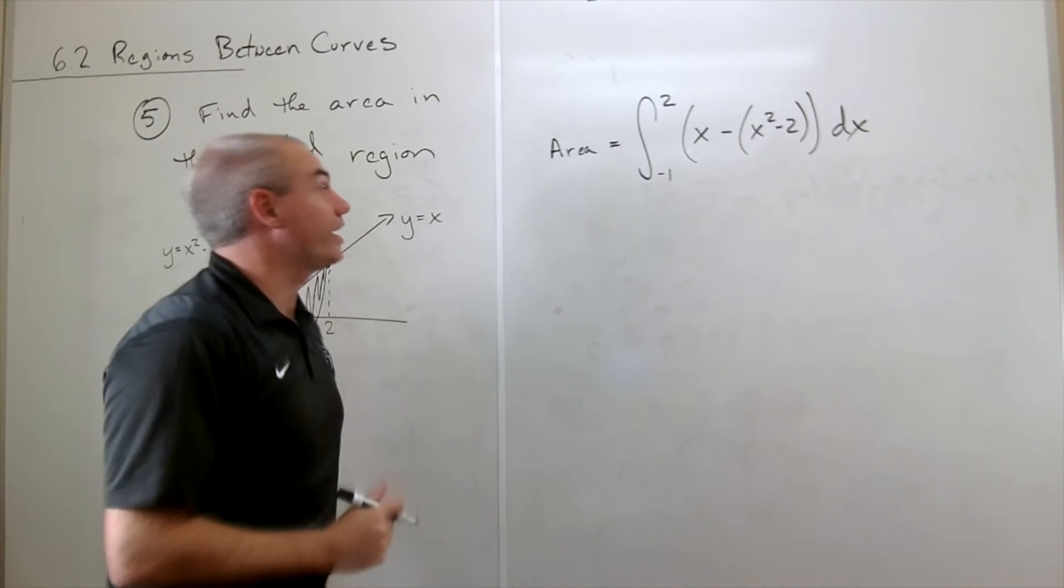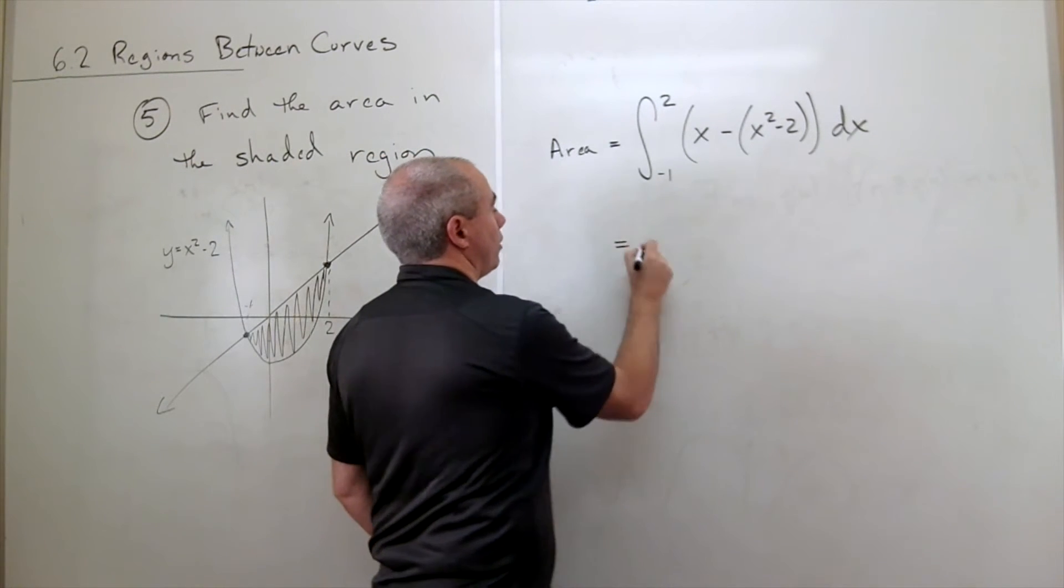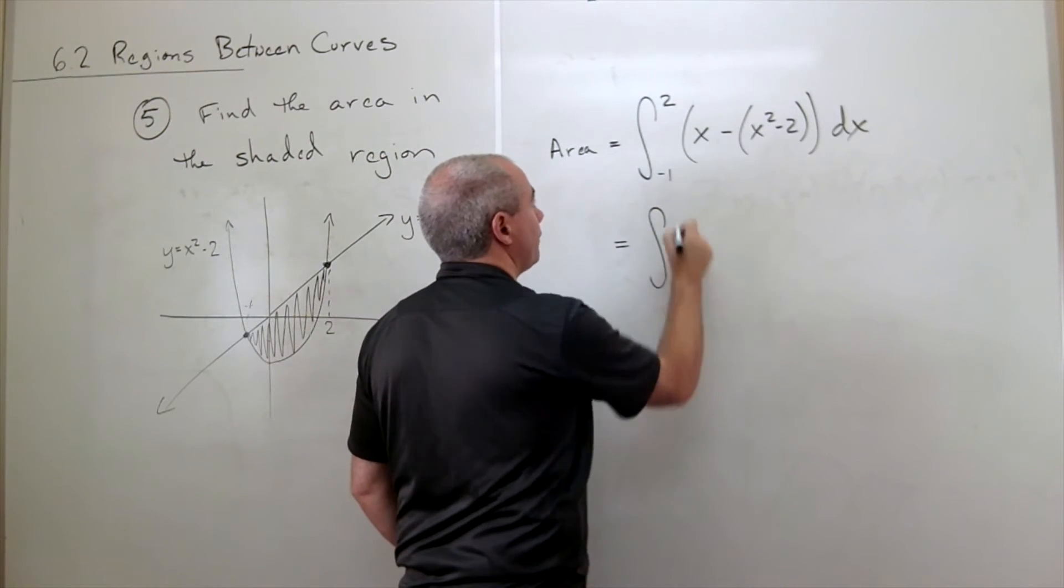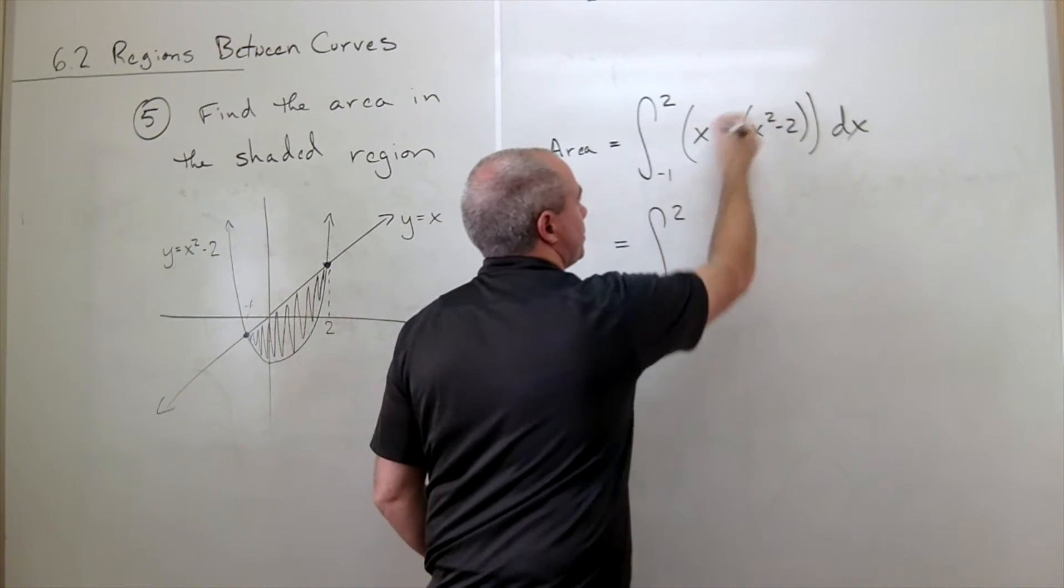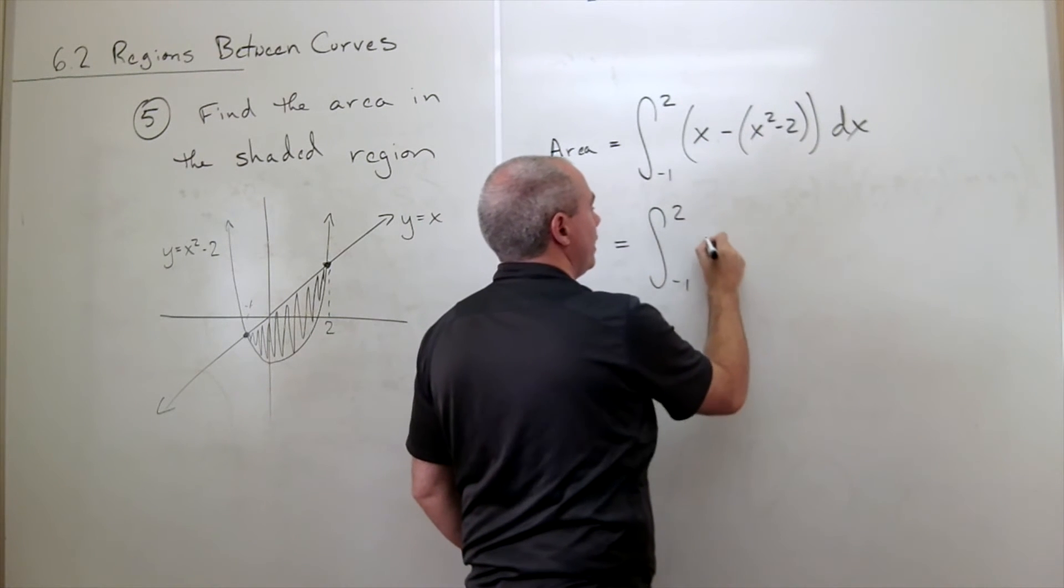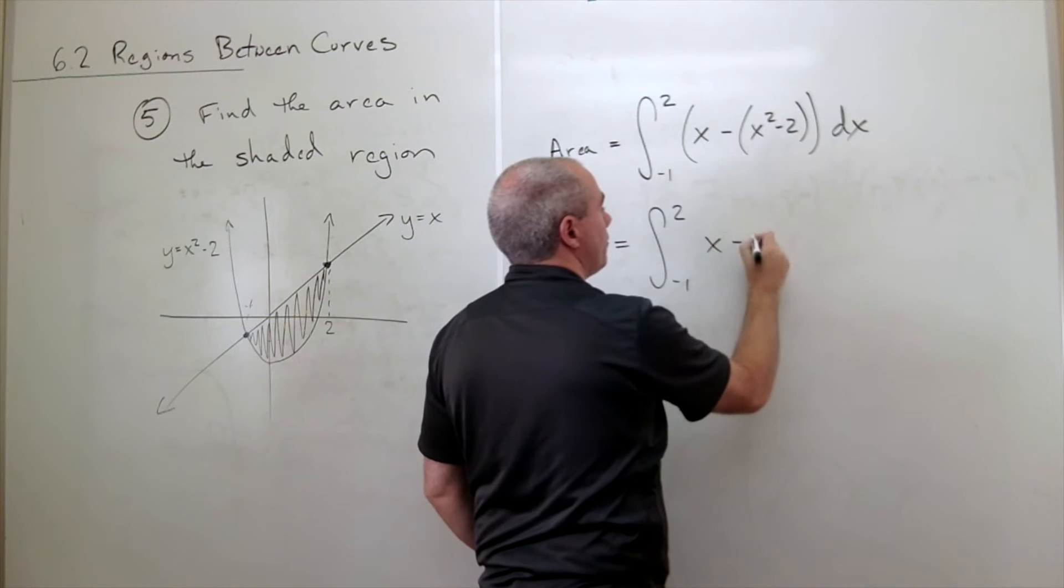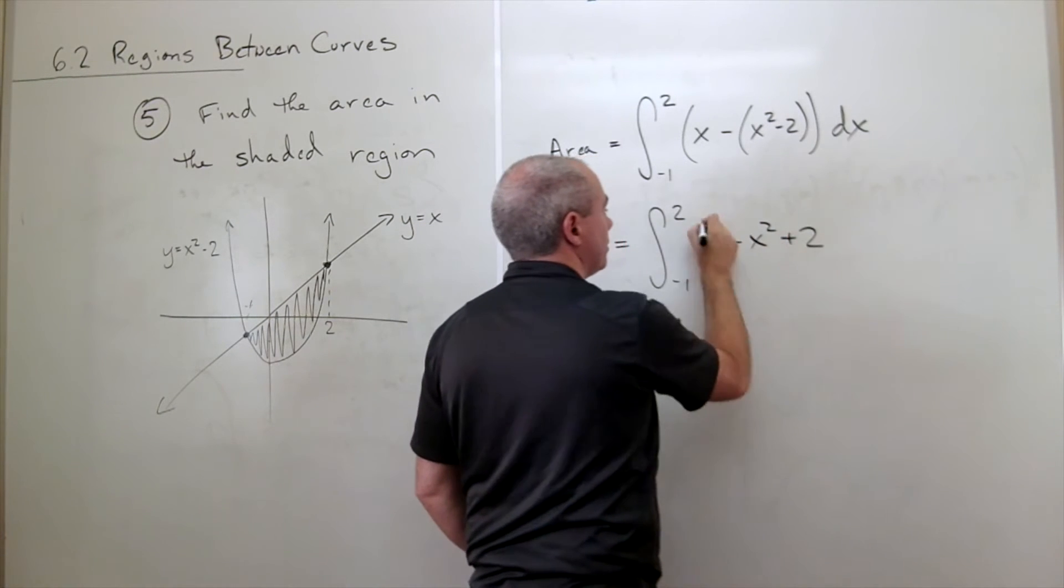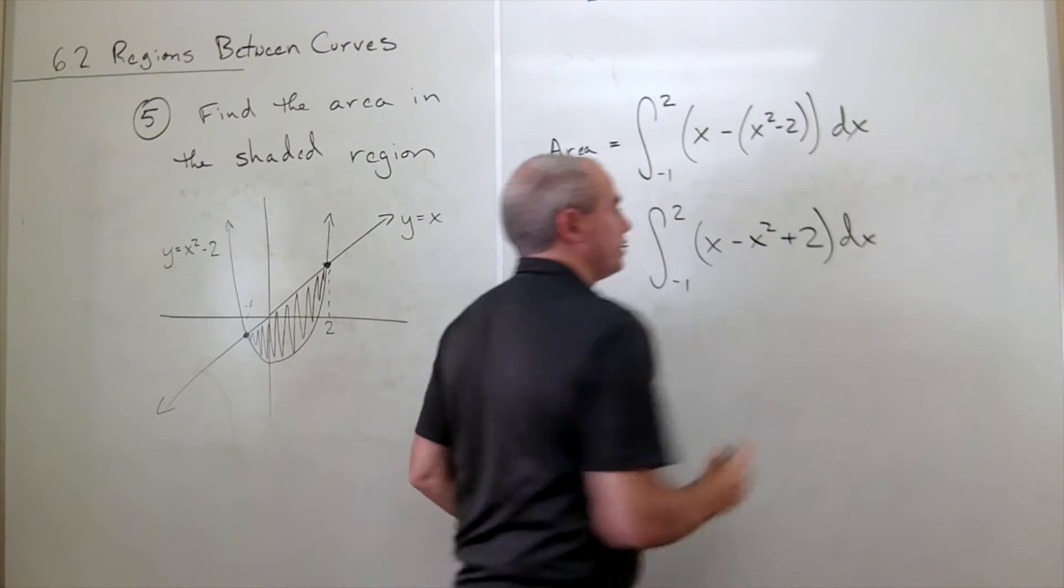Let's rewrite this. I'll rewrite this as the integral from negative one to two of, let's just distribute this negative, and I get x minus x squared plus two dx.